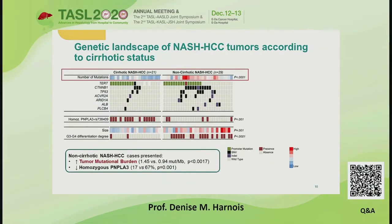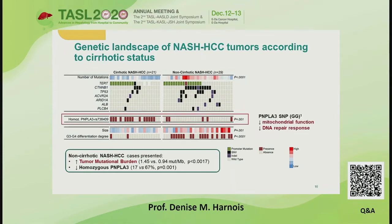They also looked to address the issue of the impact of cirrhosis on the mutational landscape of NASH-associated HCC, finding that non-cirrhotic patients displayed a higher significant number of mutations compared to the cirrhotic patients. They also presented a lower prevalence of a damaging homozygous GG variant of an already described PNPLA3 polymorphism, which was associated with a more pronounced decrease in mitochondrial function and DNA repair.